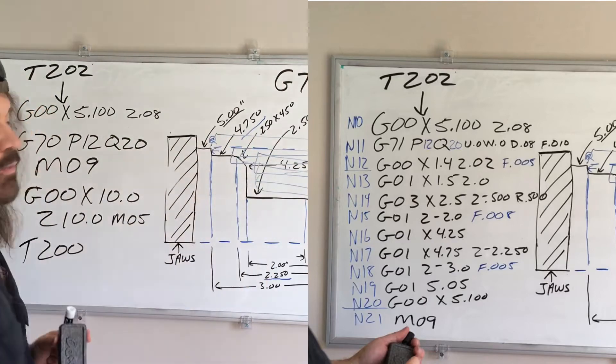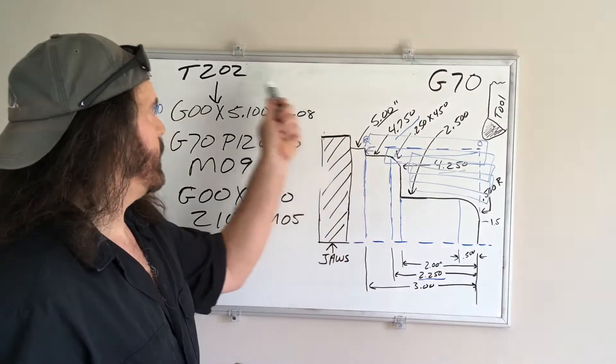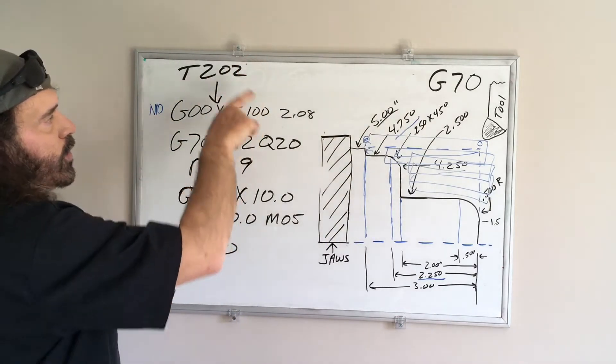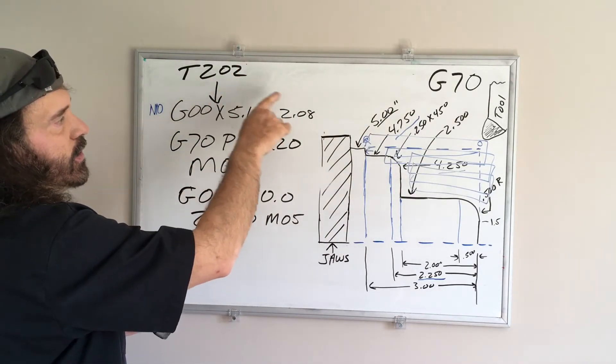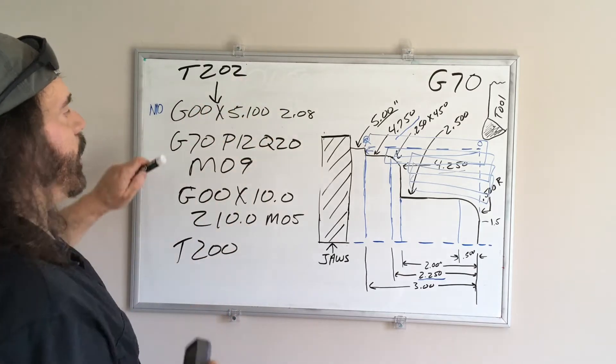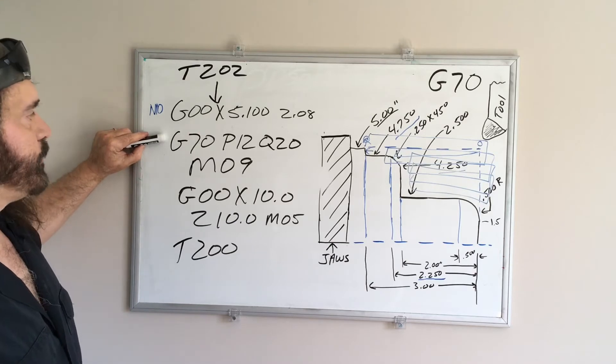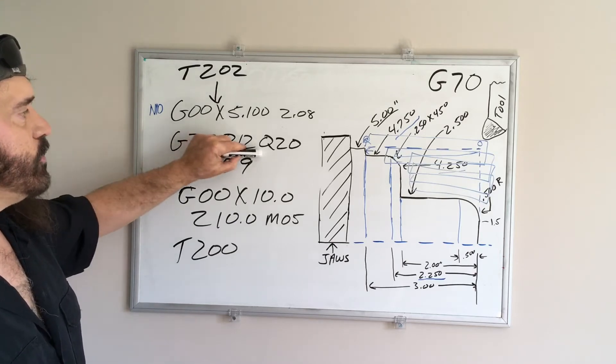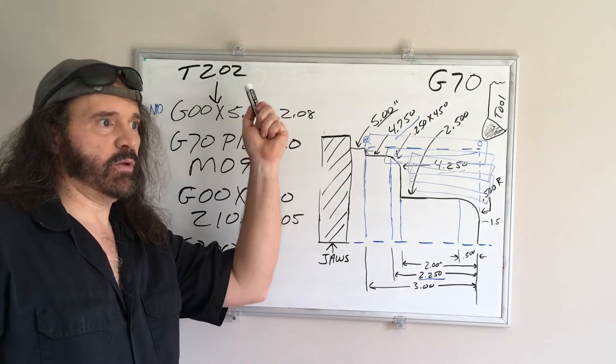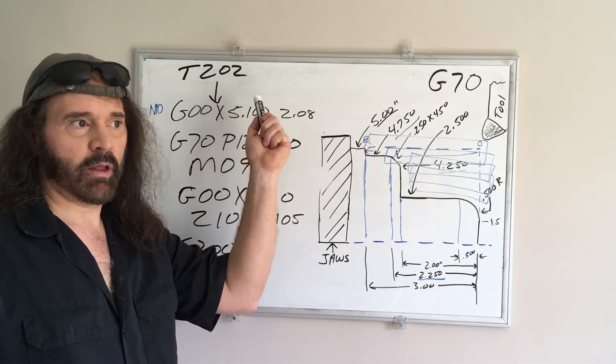So what I did was I rapid into the old dimension as far as out here where our old canned cycle started, our G71. So here you're going to write all your spindle speeds and everything, turn on the coolant, you're going to rapid to here. All you're going to do is write down a G70 P12 Q20.